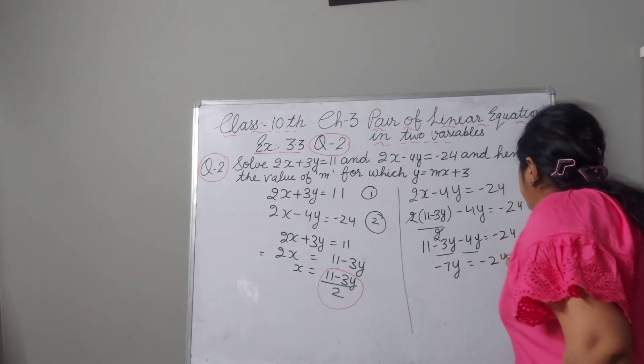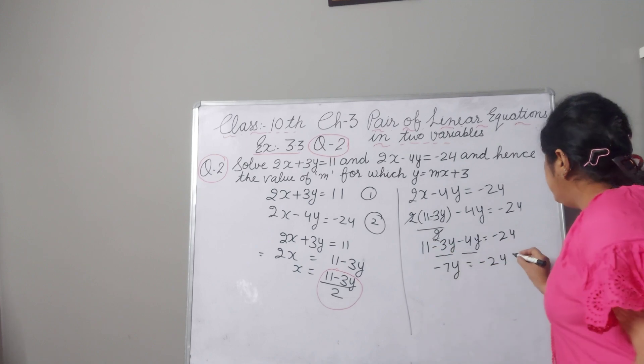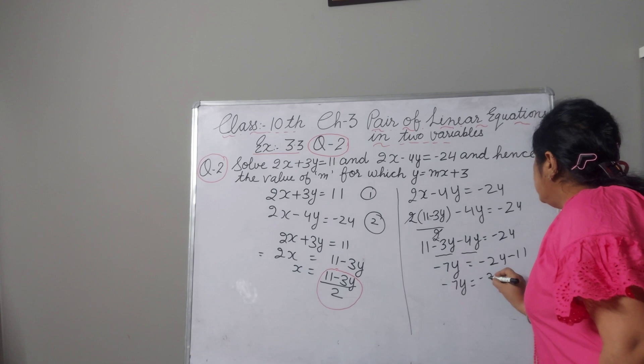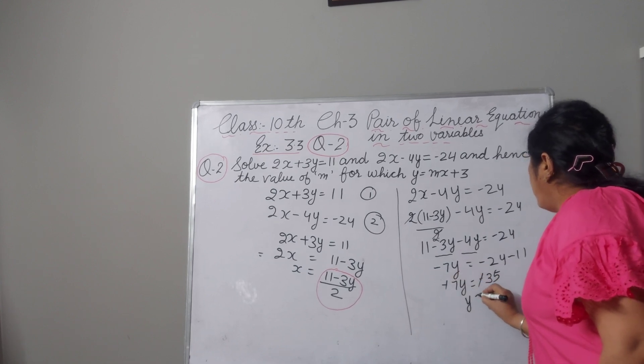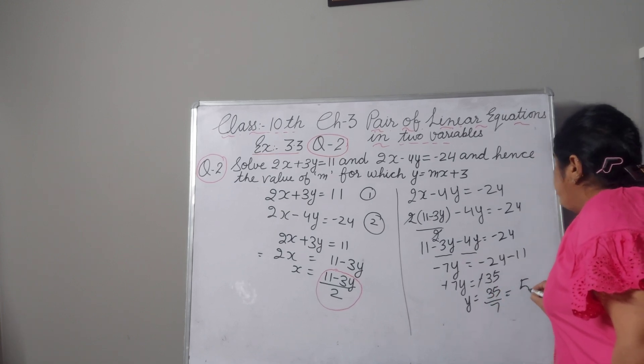Here minus 24. 11 were positive here. When it come to right hand side, sign will be changed. Minus 11. Minus 7y equal to minus 35. Minus and minus you can cancel. Y value will be 35 upon 7. Y value will be 5.